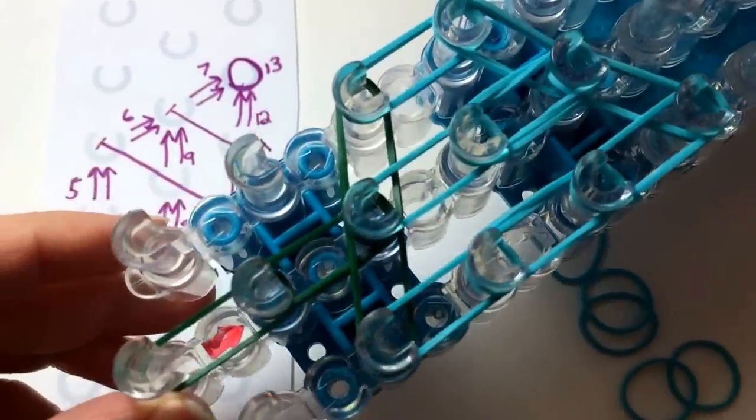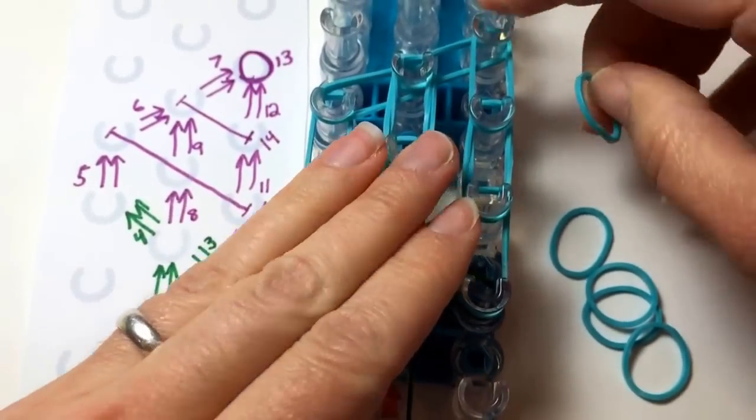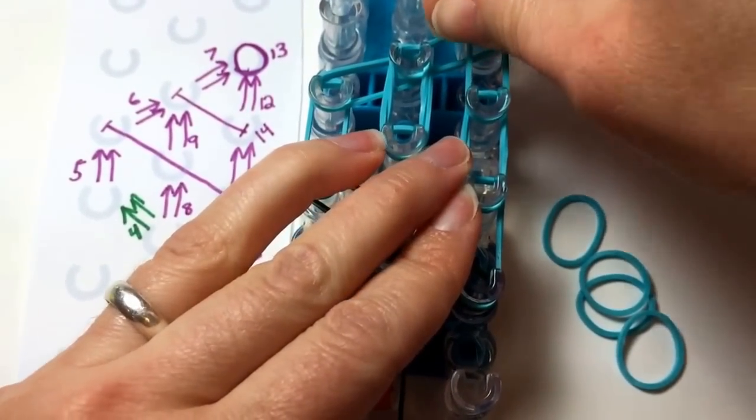And then we are ready to add the cap bands. The first will be around this peg, a single rubber band wrapped around three or four times.